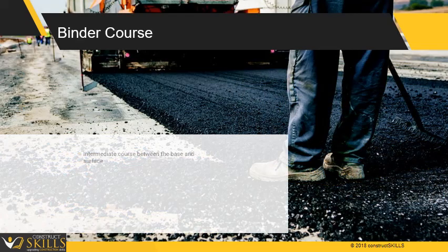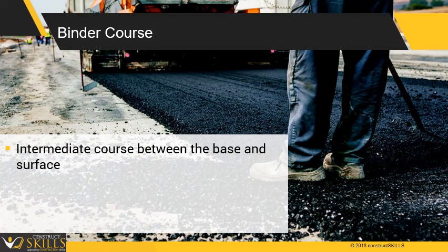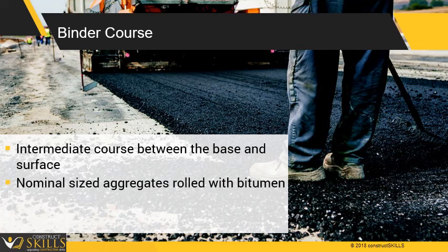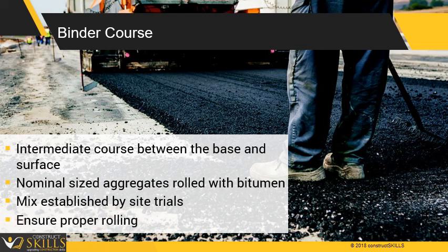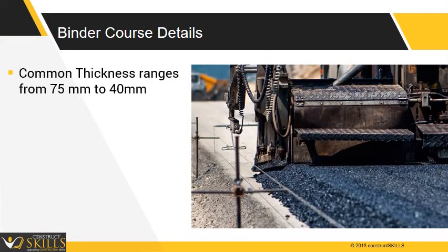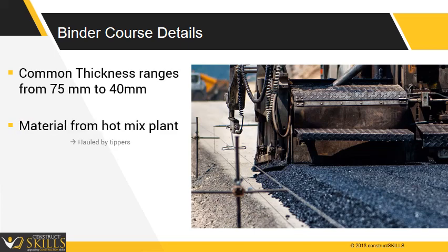Binder course is an intermediate course between the base and surface course. Nominal-sized graded aggregates, including a filler, coated with bitumen are laid hot and compacted to form a dense impervious layer. Aggregate gradation and bitumen content are established by site trials. Rolling should be done until aggregates are embedded in bitumen. Common practice is to have binder course thickness between 40 mm to 75 mm. The mix consists of well-graded aggregate, filler, and bitumen, all mixed at a hot mix plant, and the material is transported at about 150 degrees Celsius via dumpers, which is then emptied into the paver.